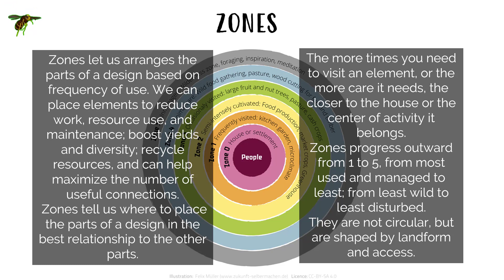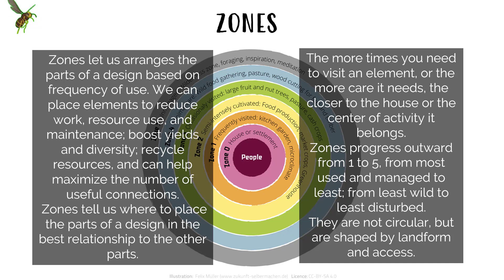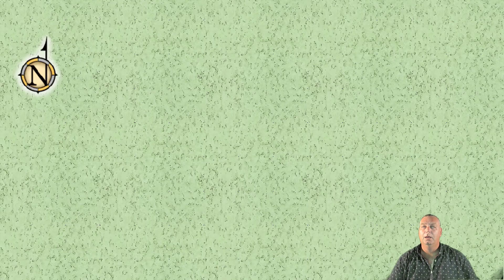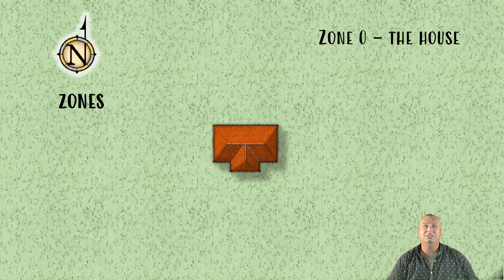Zones progress outward from zone 1 to zone 5 — from most used and managed to least, from least wild to least disturbed. They are not circular, but are shaped by landform and access. When we're looking at a blank site, we always start with our house in the centre — where we spend most of our time, energy, and resources — which is typically our home. That is what we call our zone 0, or the house.